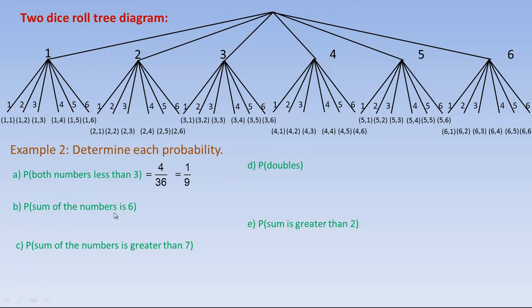For B, the probability that the sum of the numbers is six. We look for how many pairs have a sum of six: one and five, two and four, three and three, four and two, and five and one. Note that two-four and four-two are not the same roll — two-four means you get two first and four second, while four-two means four first and two second. Everything else sums to more than six. So there are five different rolls that add to six, giving a five out of 36 chance.